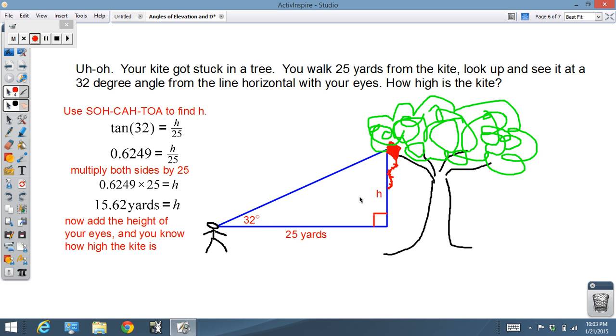So the tangent of 32 equals h over 25, opposite over adjacent. And then use your math to find out, you can follow along with it now. So the height of your kite is the height of your triangle plus whatever height your eyes are at. Good enough.